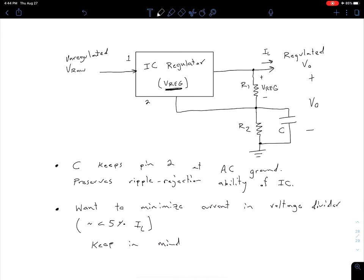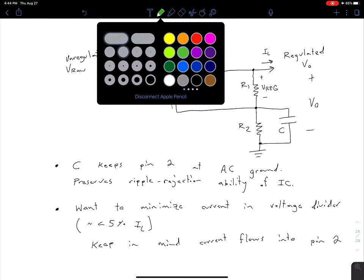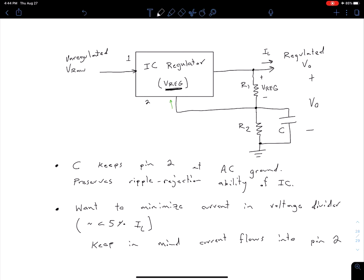Keep in mind current flows into pin 2, the ground pin to the IC. We need to consider that when determining how much current is drawn away from IL into this voltage divider, because some current branches off to go into the IC.